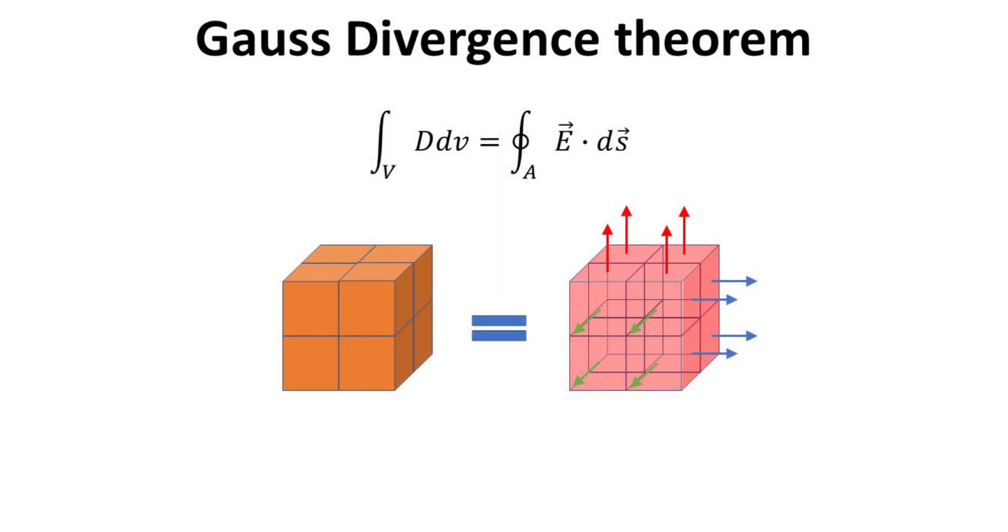The divergence theorem, also known as Gauss's theorem, is a fundamental result in vector calculus that relates the flow of a vector field through a closed surface, as illustrated on the right, to the integrated divergence of the vector field within the enclosed volume, as illustrated on the left. In simple English, it tells us that the amount of stuff flowing out of or into a region must be equal to the amount of stuff that is being produced or consumed within that region.